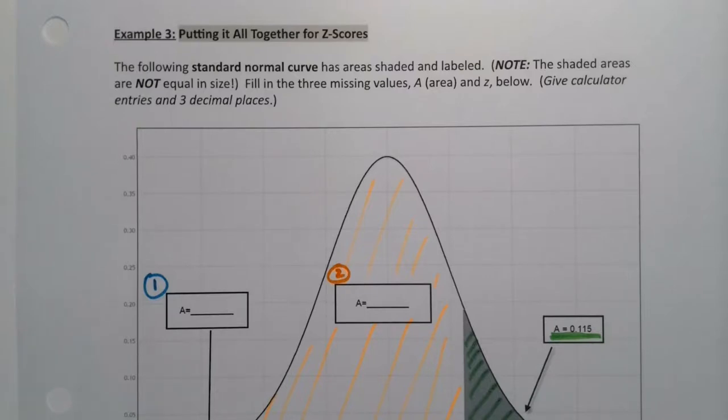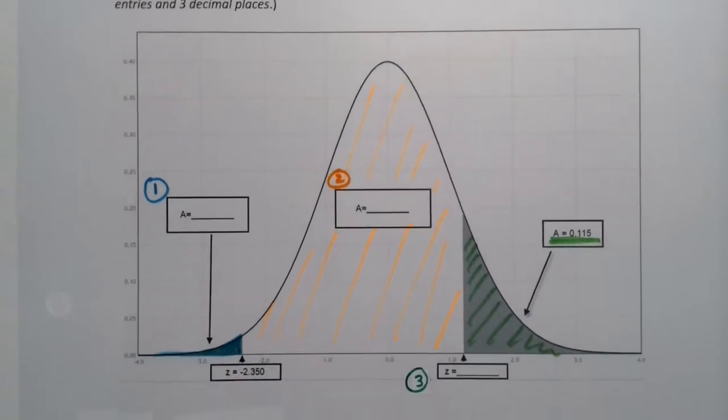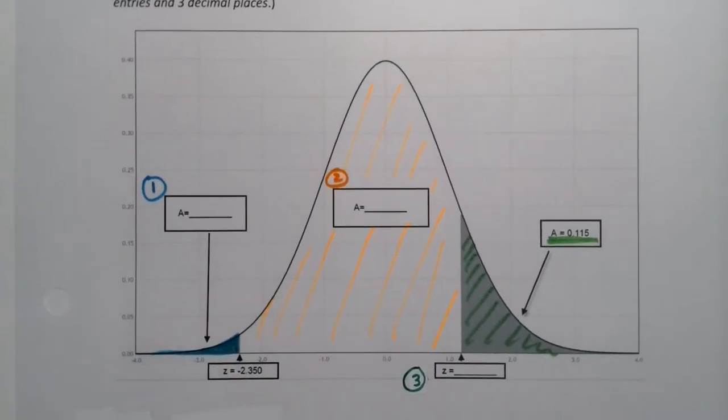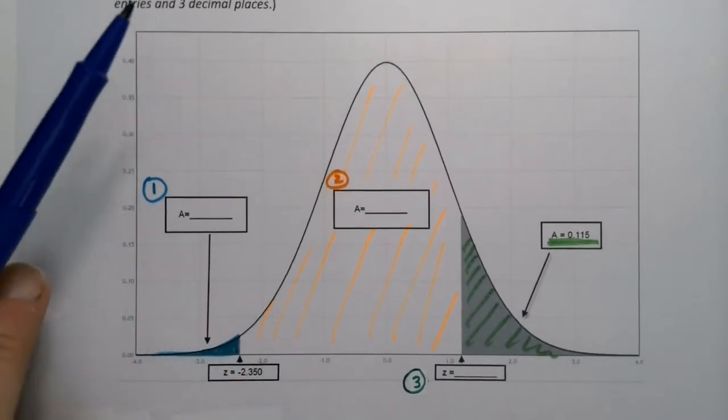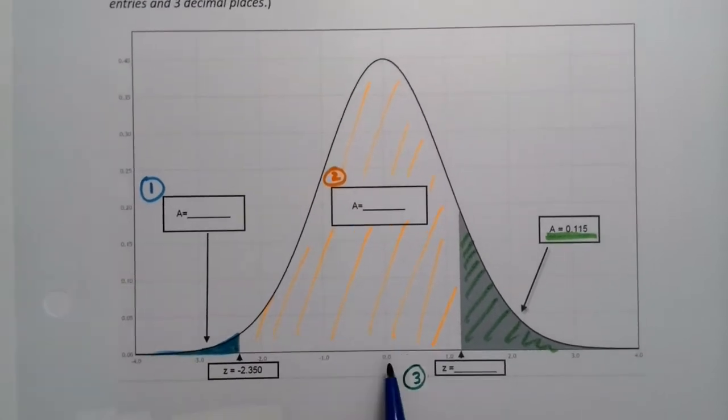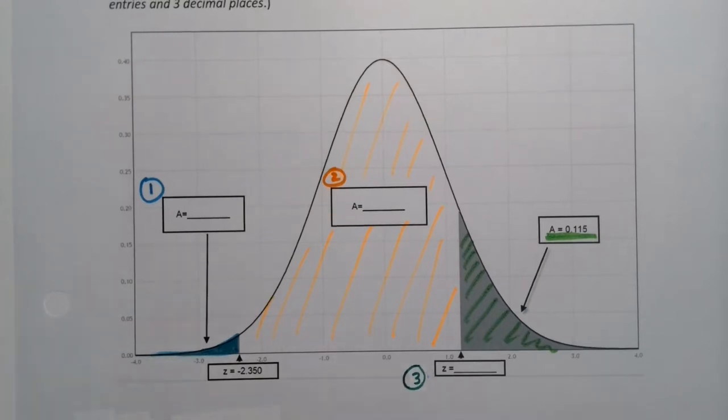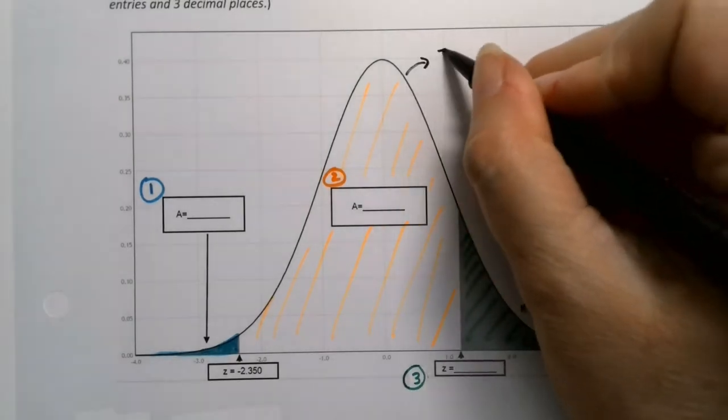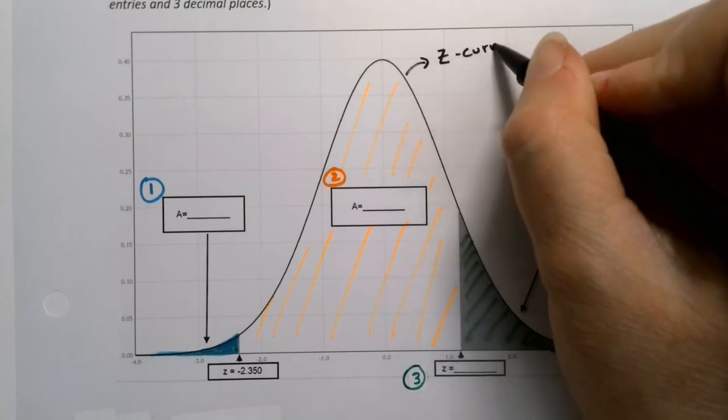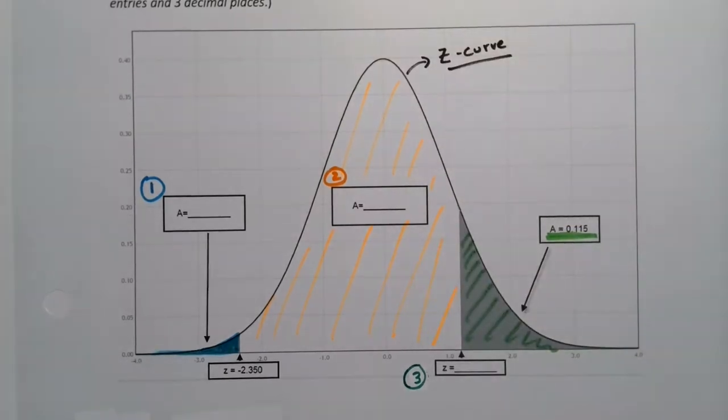The following example lets us put together everything we've learned about z-scores and the normal curve in one great example. We have a standard normal curve drawn, and you can tell it's standard because the center is 0 and the standard deviation is 1, so you know this is a z-curve.